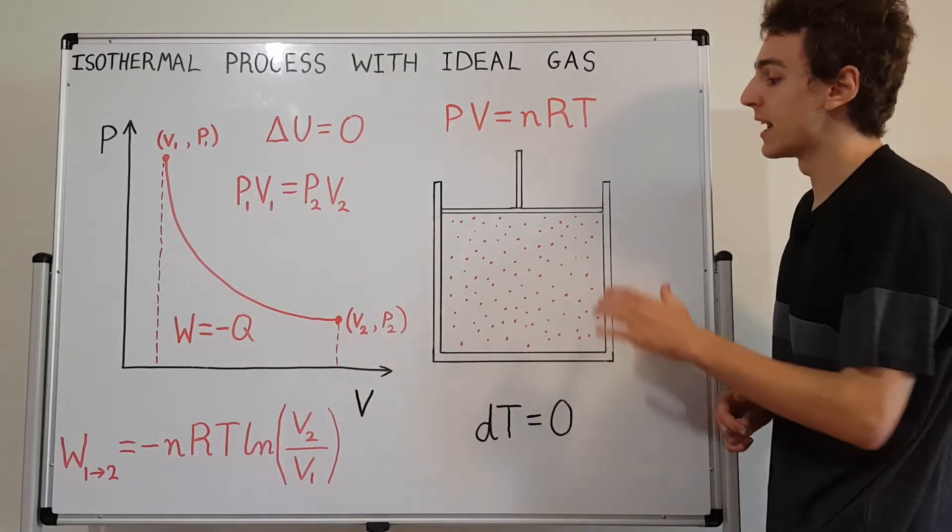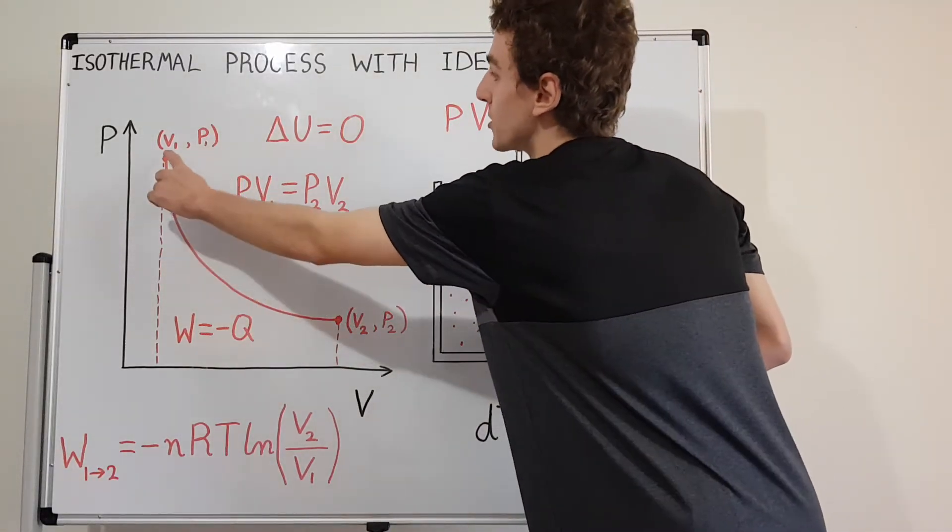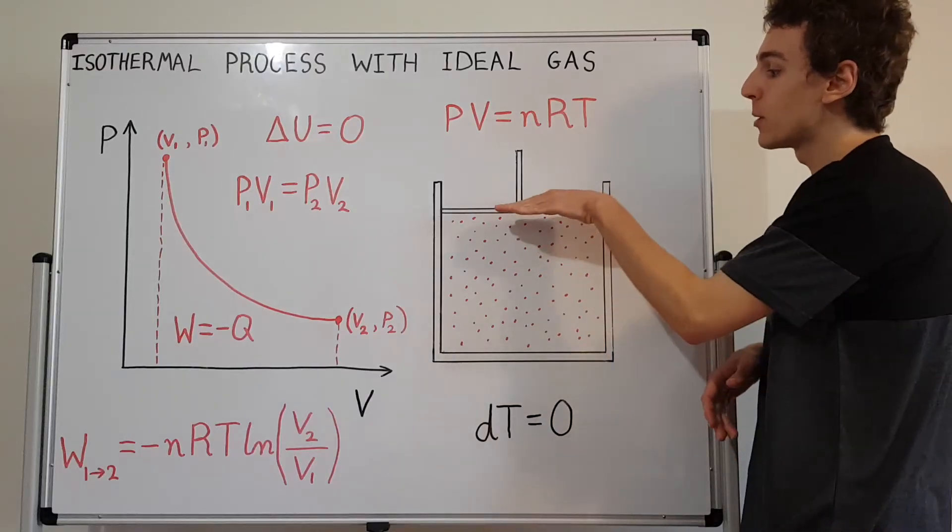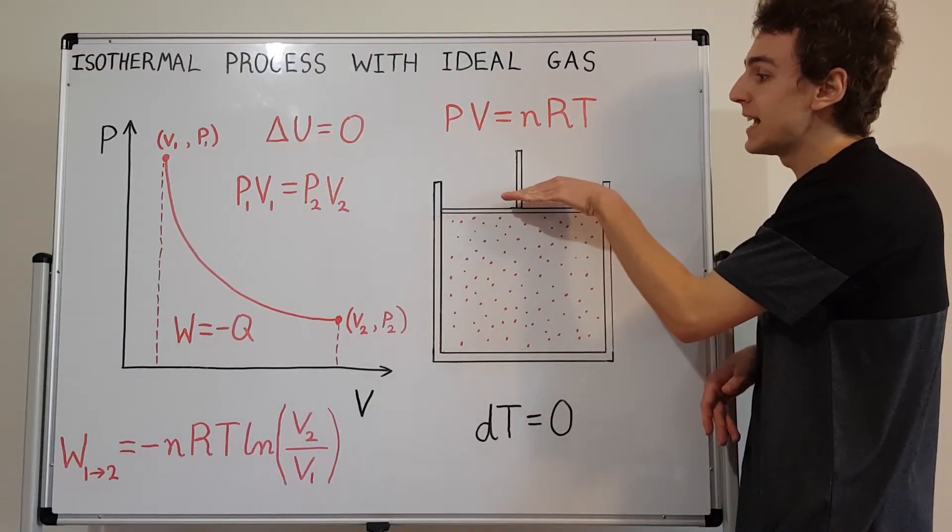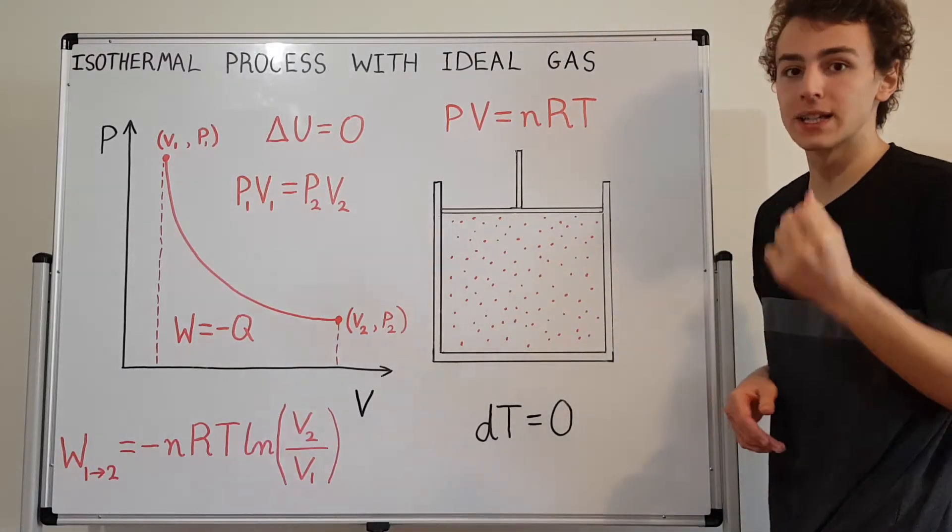So if we would implement an isothermal process, let's say it's isothermal expansion, where we start at this point and finish at this point, what would that look like physically? Well, we'd be starting over here, and we'd be increasing the volume. The volume is getting bigger, so this would be expansion, isothermal expansion.